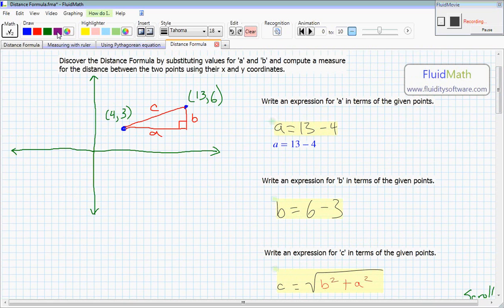So if this instead was x1 comma y1, and this one was x2 comma y2, we could do what it's asking. We can, instead of using these actual points, 13 comma 4 and 6 comma, 6 minus 3,